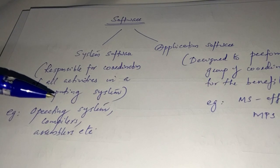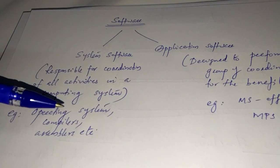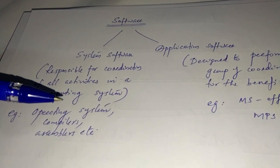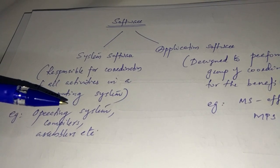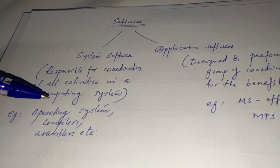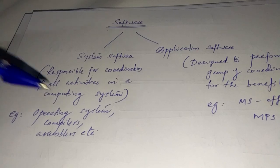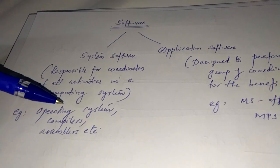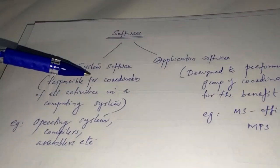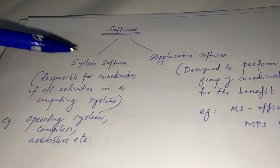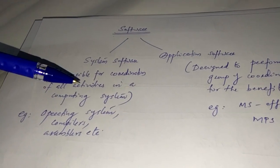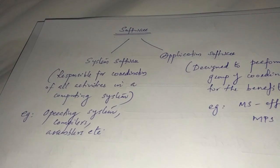Android is an operating system. Earlier Nokia devices used Symbian OS. So system software is responsible for the coordination of all activities in a computing system.